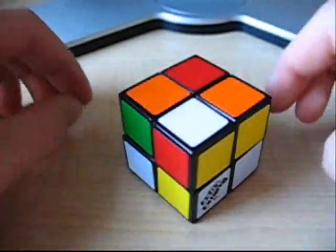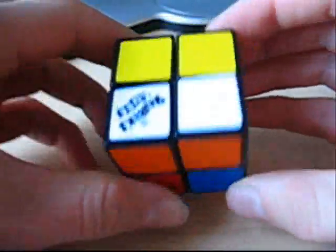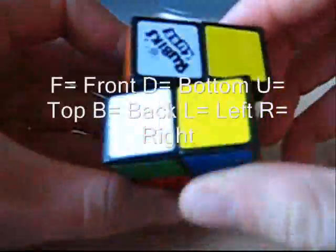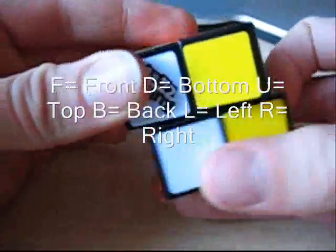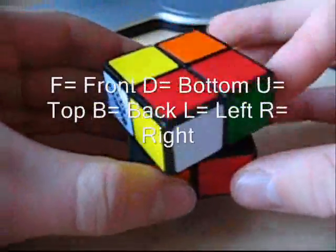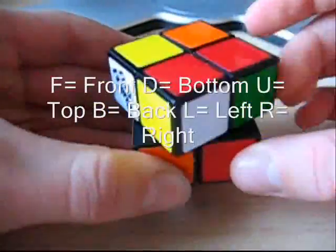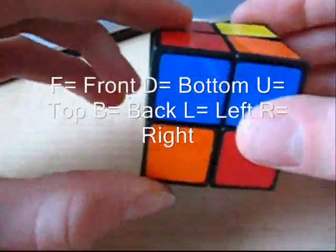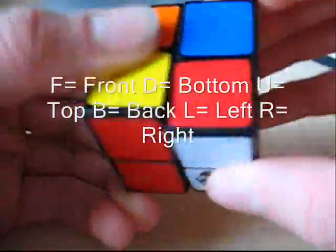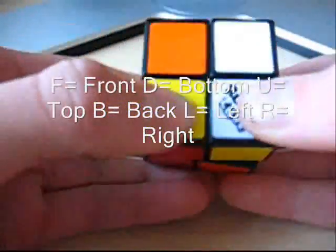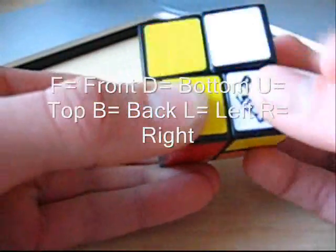But, like the 3x3, they're still the same sides. F for front, D for the bottom, U for the upper level, L for the left side, R for the right side, and B for the back side.